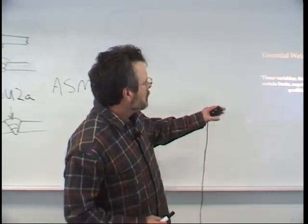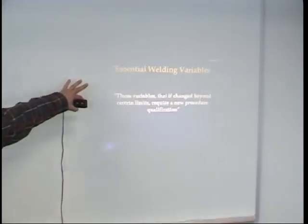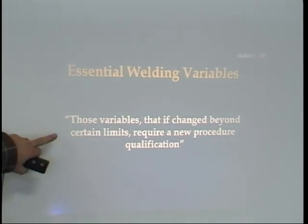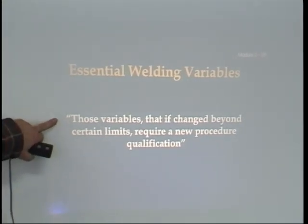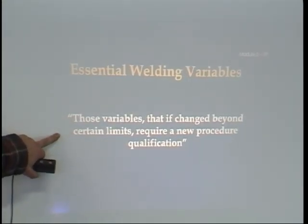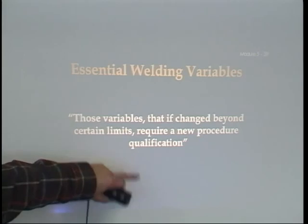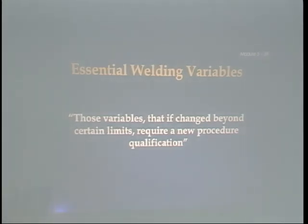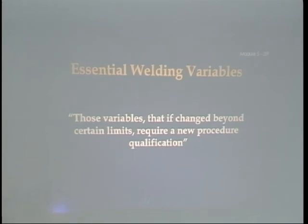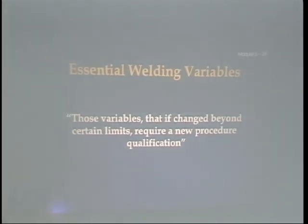Essential welding variables are those that, if changed beyond certain limits, require a new procedure qualification. If the people you're supervising run a weld at 175 amps and the procedure's limitation is 130 amps, they're outside those parameters and you need a new procedure.